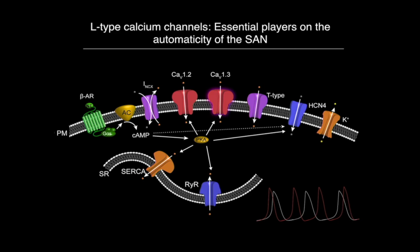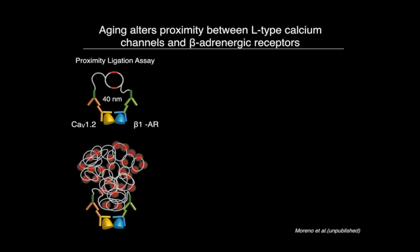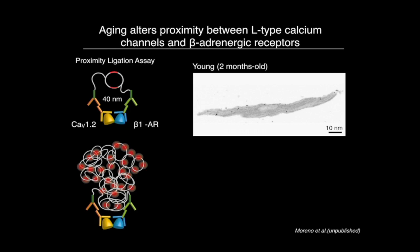We have started to test proximity of these components using proximity ligation assay, in which you recognize proteins with primary antibodies, then use secondary antibodies carrying oligonucleotides. If your proteins happen to be closer than 40 nanometers, a ligation reaction occurs and you perform essentially a PCR on top of your proteins, amplifying these oligos — and since the DNA probes carry fluorescent markers, you end up with a bright fluorescent spot on top of closely-associated proteins. We evaluated the proximity between CAV1.2 and beta-1 adrenergic receptor in young and old animals.